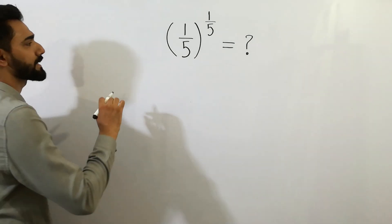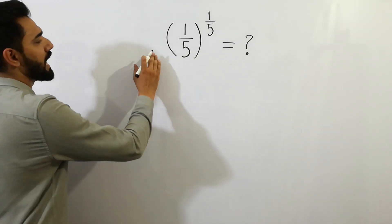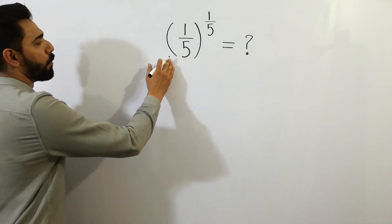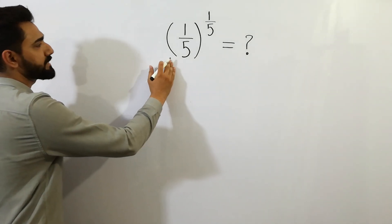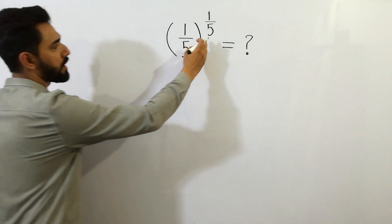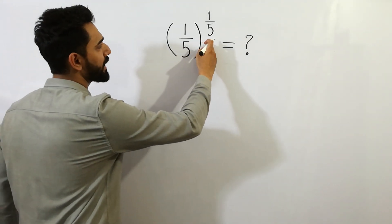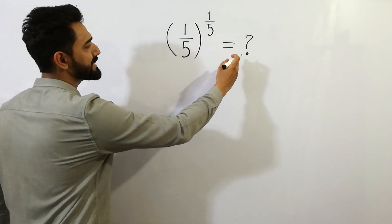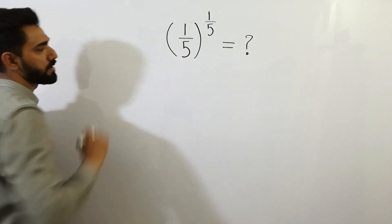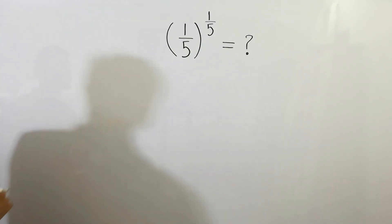Hey guys, 1 over 5 to the power 1 over 5 is equal to — let's solve it.